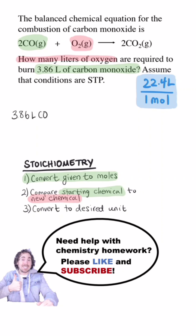So I take 3.86 liters of carbon monoxide and multiply by the conversion factor one mole over 22.4 liters. I put liters on the bottom to cancel the starting unit and the unit I want to convert to should be on the top.